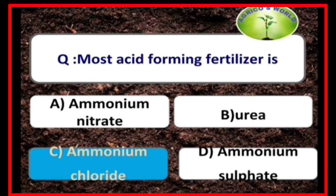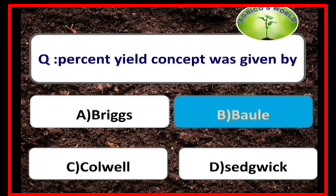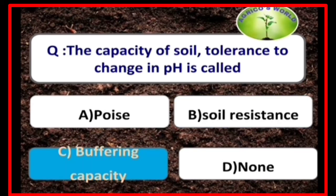Ammonium chloride is the most acid-forming fertilizer. Percent yield concept was given by Bor. Buffering capacity is the capacity of the soil to tolerate change in pH.